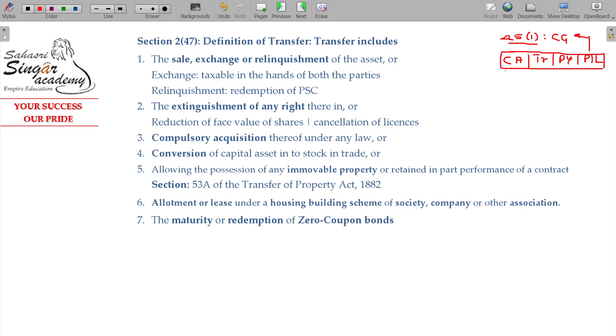We will see capital assets in Section 2 Class 14. Now, transfer in Section 2 Class 47 - we will see what is called transfer. When we do transfer, we have some other words also coming under transfer. That is why Section 2 Class 47 is defining. So we will see sale.